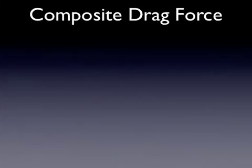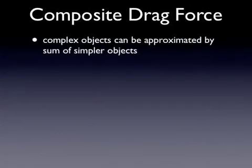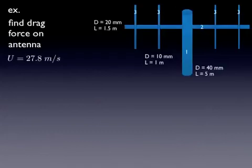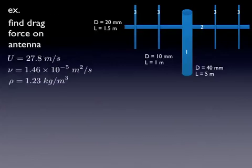Now for more complex objects I said you should really measure it directly or with a scale model in a wind tunnel or if you're sophisticated use a simulation model. But there's a third option. You can also approximate complex objects by summing up simpler objects. So let's look at this antenna which is a series of columns.